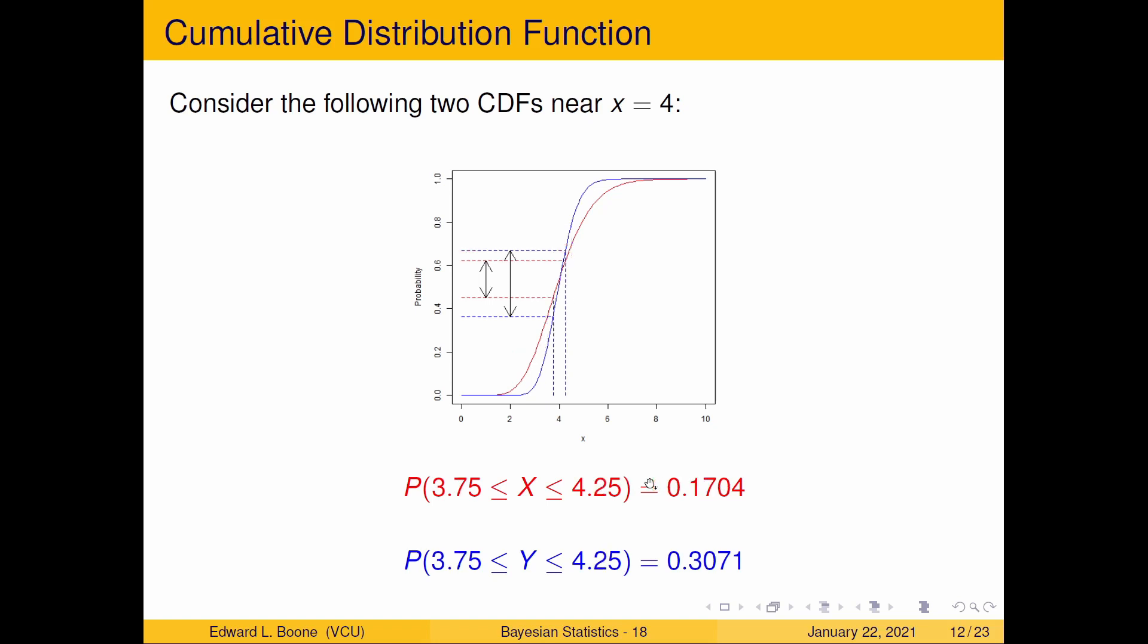Now, if I shrink this down, notice I said I'm interested in near 4. So I went 3.5. What if I went to 3.75 and 4.25? Well, notice that things shrink down over here. You can see these arrows got a little bit shorter. And we notice that this probability dropped off dramatically, and so did this one. But this one's still higher than that one. And that has to do with the steepness.